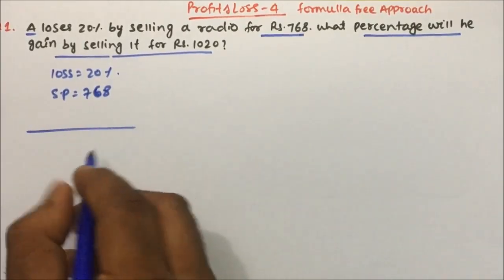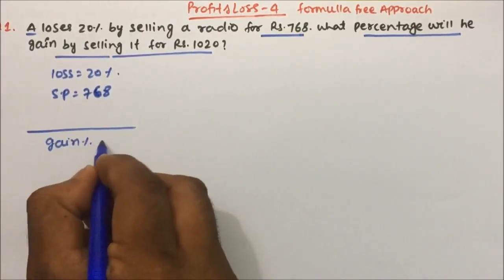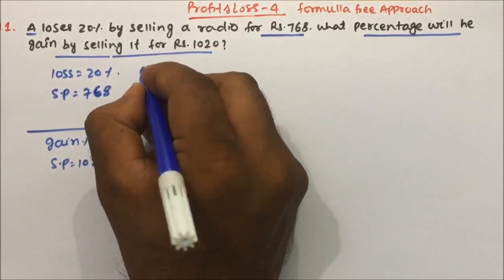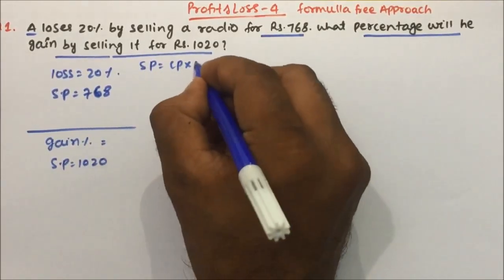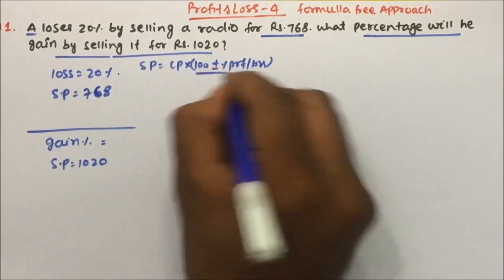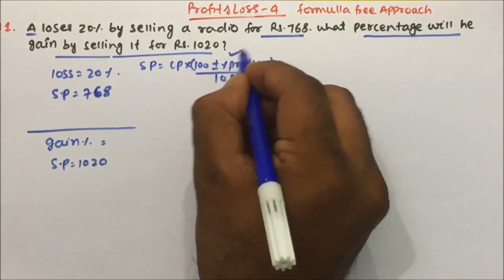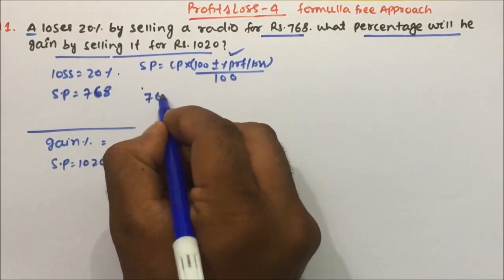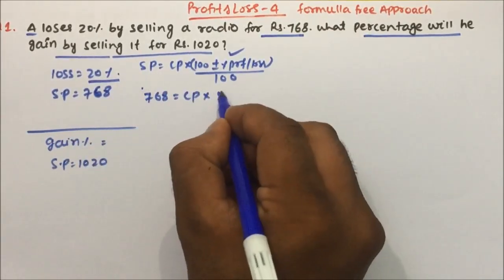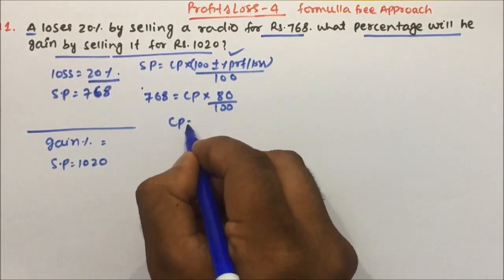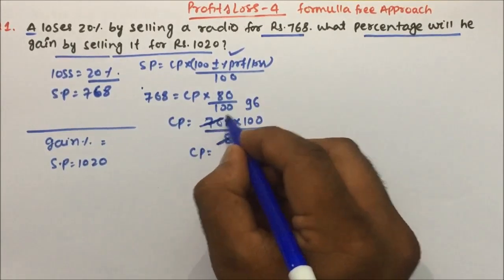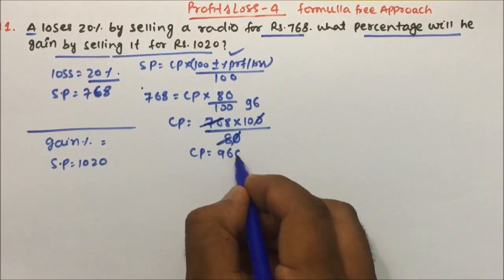They are asking what will be the gain percentage when he sells at 1020 rupees. So we have to calculate CP. The formula is: SP equals CP into (100 plus or minus percentage of profit or loss) divided by 100. Here it is a loss, so we take 100 minus loss. SP is 768, so CP into (100 minus 20) divided by 100, which gives CP equals 768 into 100 divided by 80. So CP will become 960 rupees.